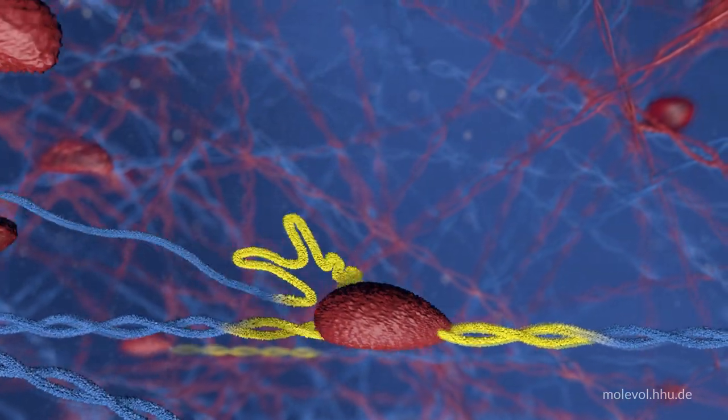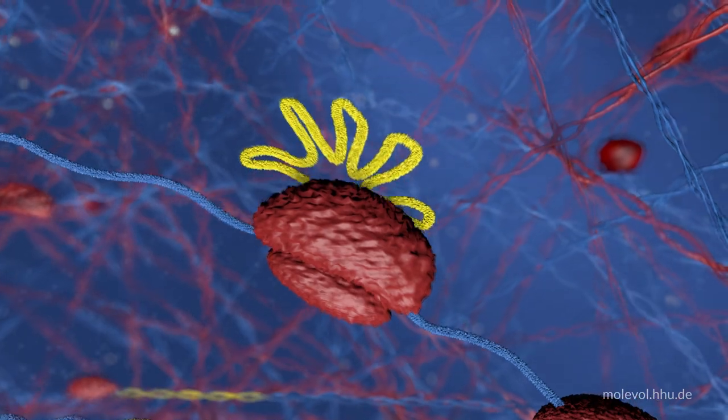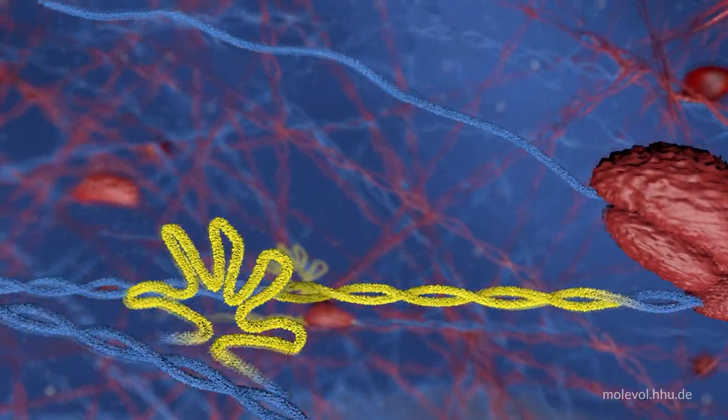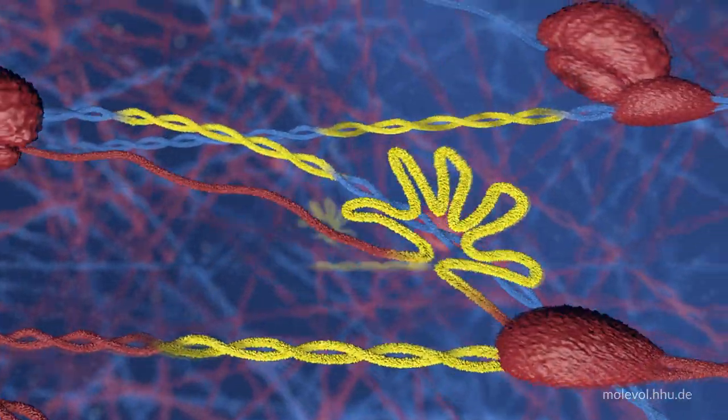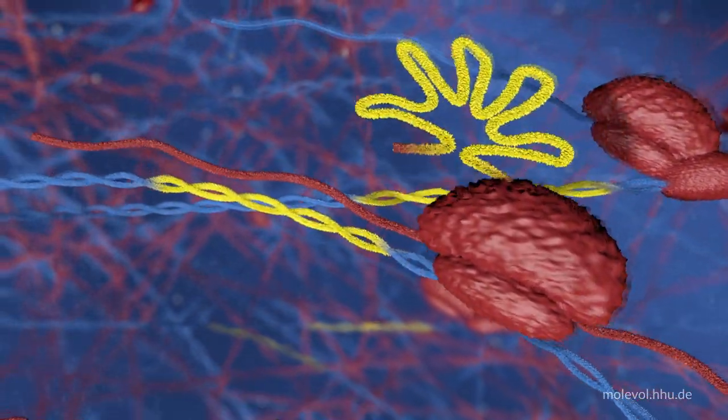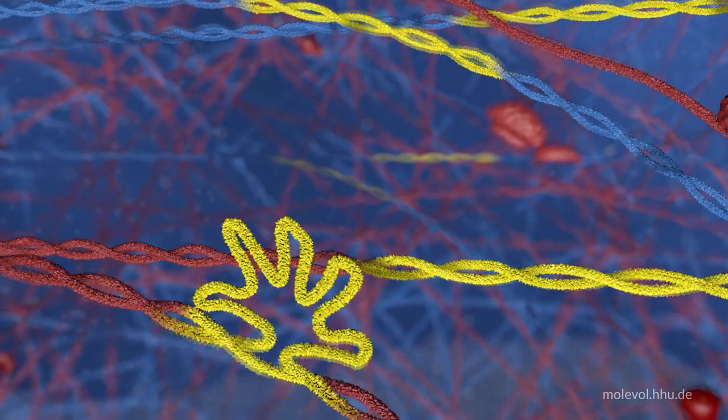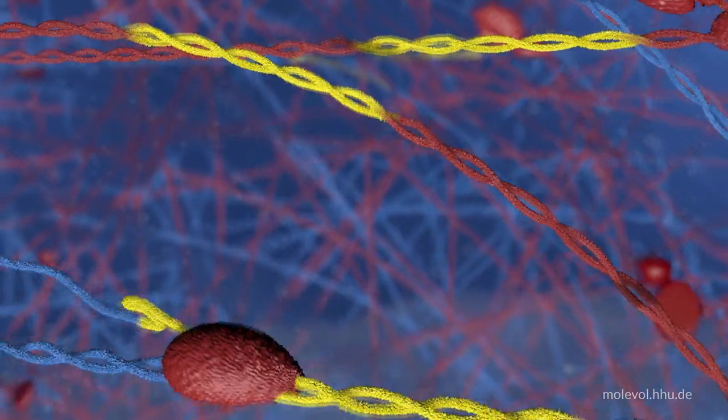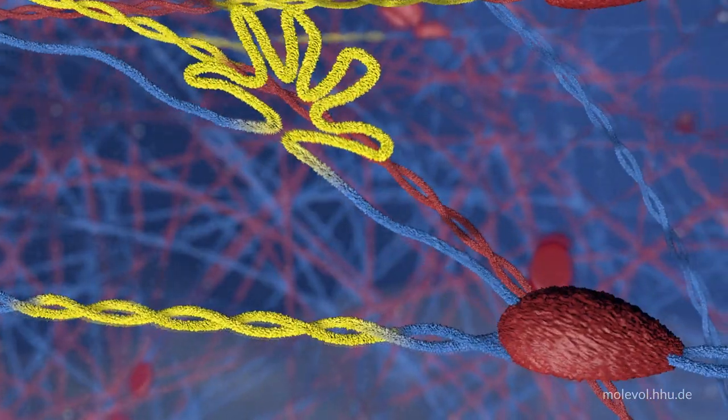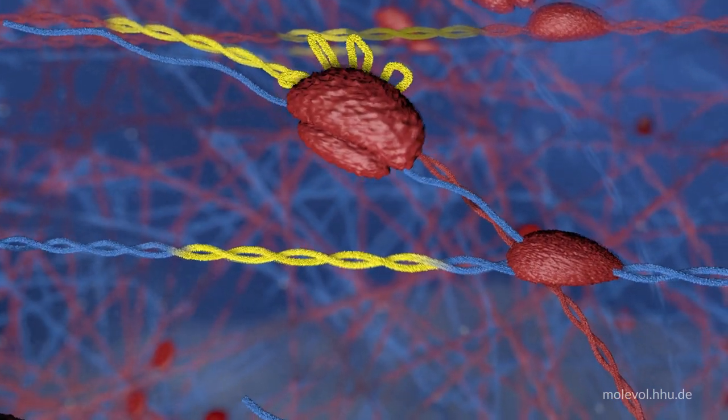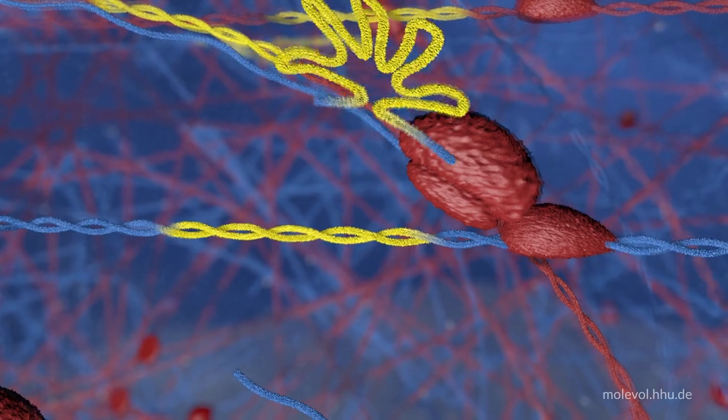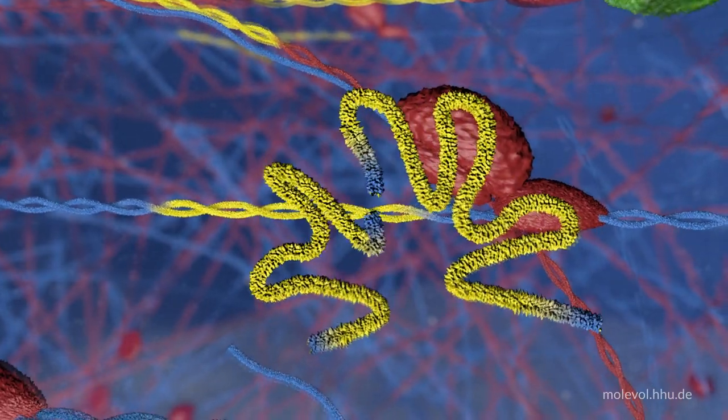Bacteria contain genetic elements called group 2 introns. These can remove themselves from the mRNA by encoding a maturase. They are self-splicing. They can also multiply and spread, with the ability to insert themselves into many different sites in the genome. But during eukaryote origin, these group 2 introns underwent a fateful transition. They fragmented into smaller introns and splicing machines called the spliceosome, shown here in green.